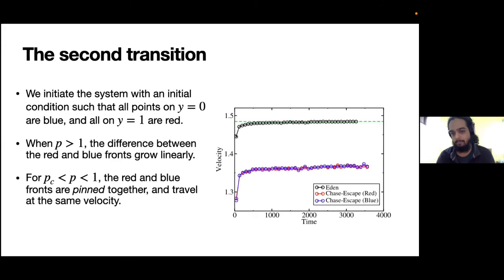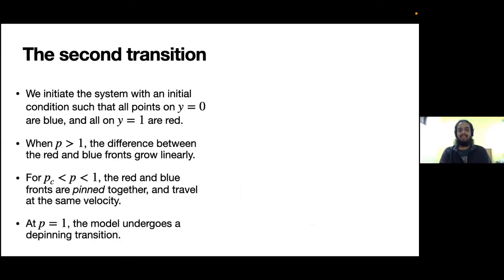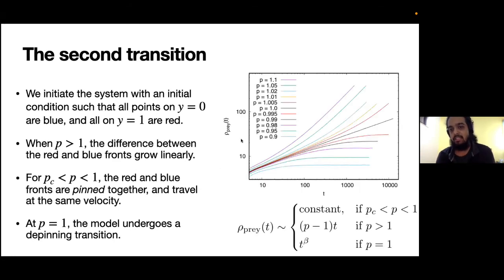Notably, the velocity of the Chase-Escape front is smaller than the velocity of the Eden front that would have been propagating at the same value of p. I just wanted to point out that at p equal to one, this model undergoes a depinning transition, where below p equal to one the blue and red fronts coincide and move together, and above p equal to one the difference between the fronts grows linearly in time.